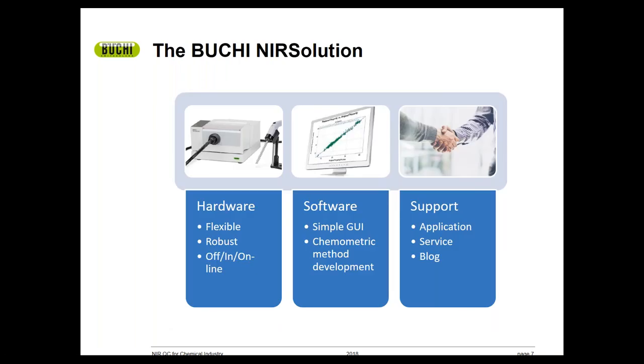Buki offers a full NIR solution, including hardware, software, and support. We have a variety of hardware options, including flexible systems optimized for liquids or solids in the lab, as well as ingress-protected outline instrumentation and inline or online process control equipment. Our software includes simple graphical user interfaces and powerful tools for method development. We offer application support, on-site and in-house service, and offer a blog and various training programs to help communicate important information to our users.